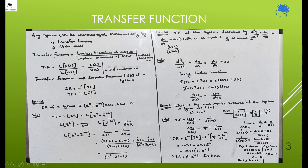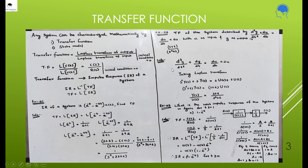Next example: the transfer function of the system described by d²y/dt² + dy/dt = du/dt + 2u, with u as input and y as output, is (s+2)/(s²+s). So let us move to the solution. You have to find the Laplace transform of this equation.